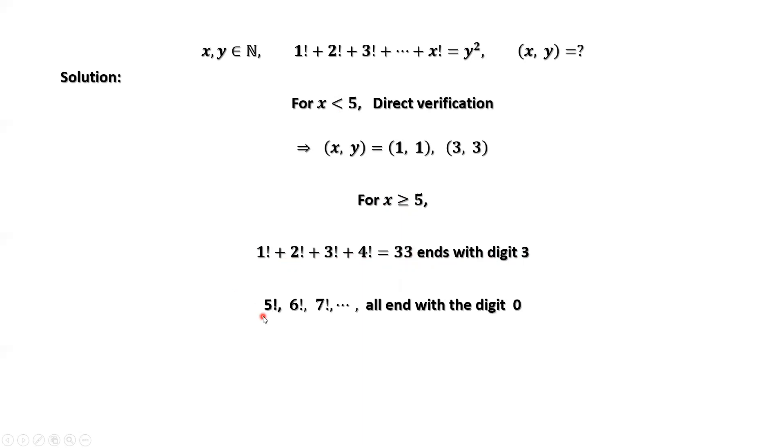Start from 5 factorial, 6 factorial, 7 factorial, all end with the digit 0. Why? Because each term contains 5 and 2 as factors. 2 times 5 is 10. Therefore, all of them end with the digit 0.